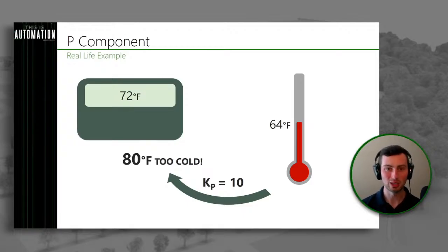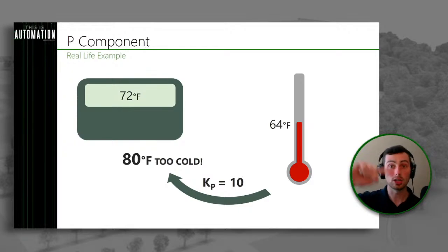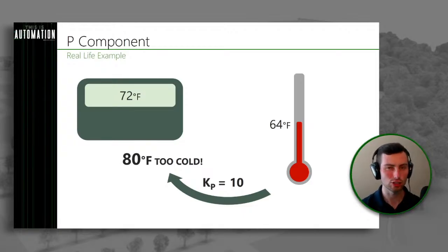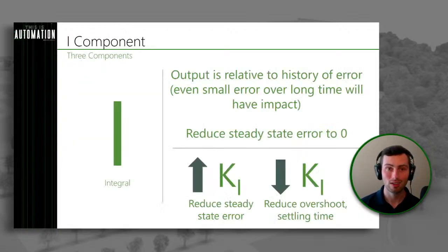There's potential for overshooting and instability if we increase KP too much. For example, if we said it's 800 degrees too cold, the emergency heat might kick on and our system's going to overshoot and not react as intelligently as possible. So how can we fix that issue introduced by using just the P component? We have other components that are going to help us out.